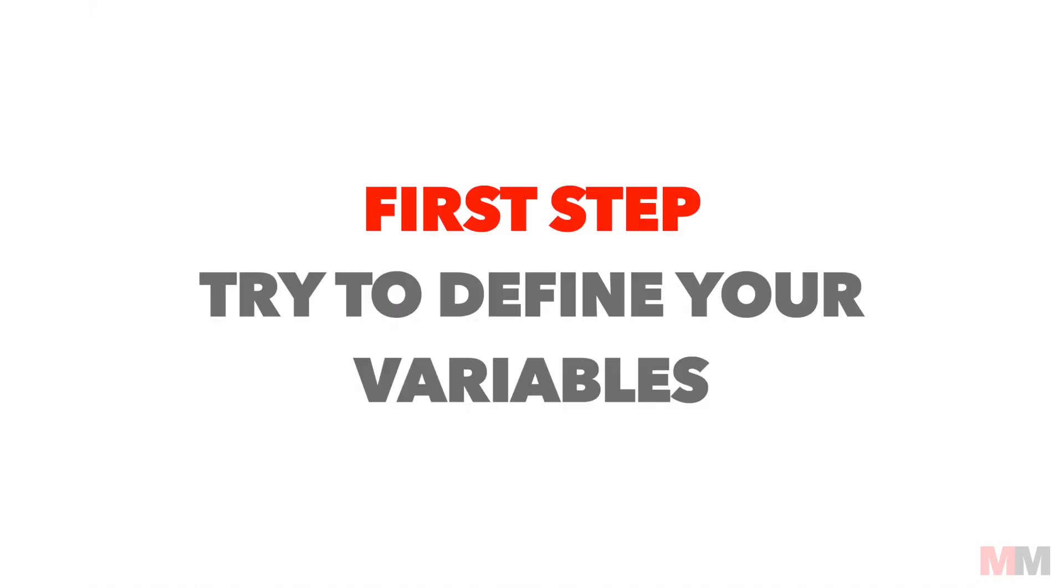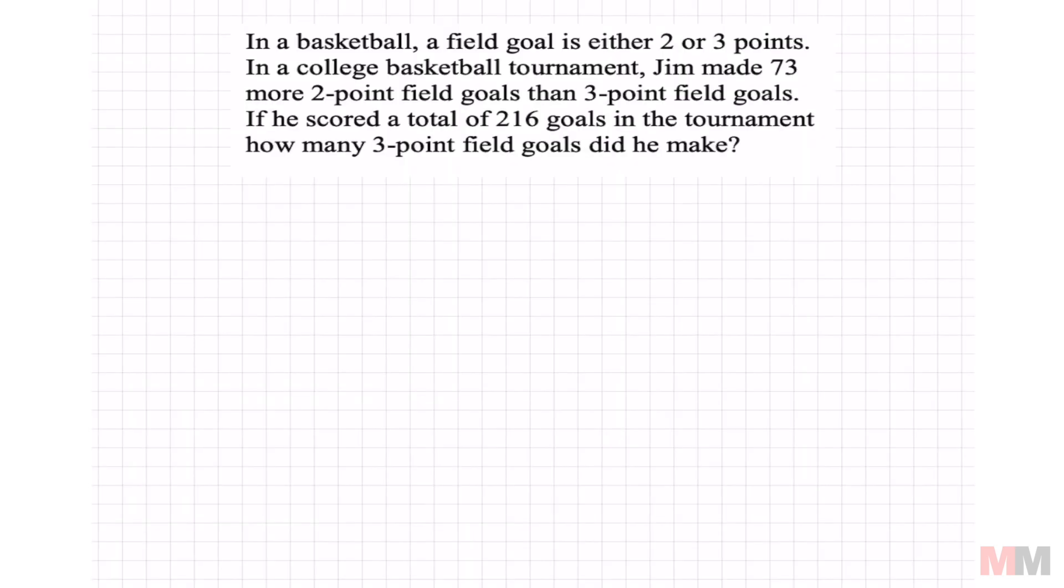Usually in the first sentence or the second, it will tell you what your variables represent. In a basketball game, a field goal is either two or three points. So right off the bat, it will tell me that x could be my two pointers and my y is my three pointers. And in most of these word problems, it will reveal itself in the first or second sentence what your variable is.